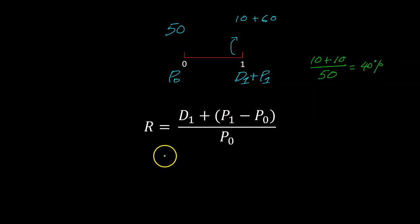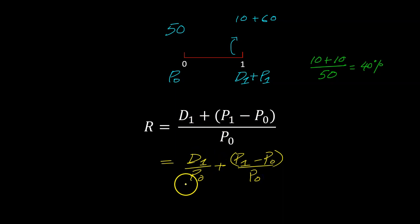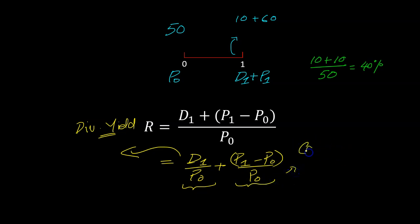You can further break this down into D1 over P0, which is known as the dividend yield — how much return you're making just through the dividend component — and then P1 minus P0 over P0, which is known as capital gains — how much return you made based on the difference in prices.